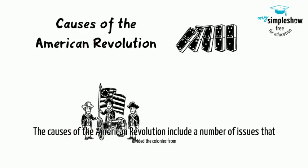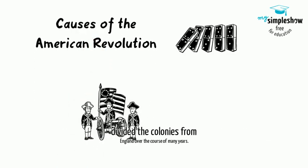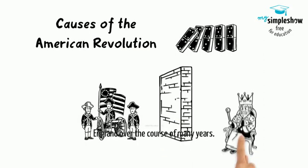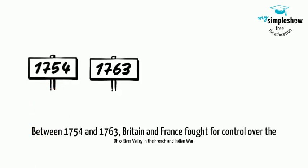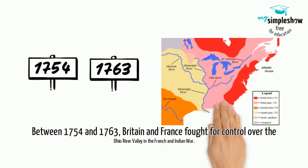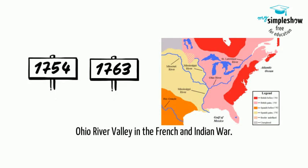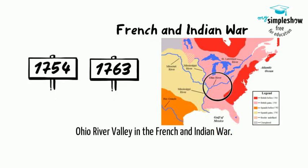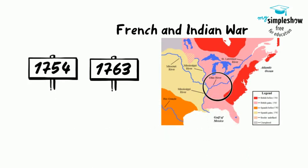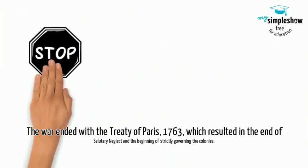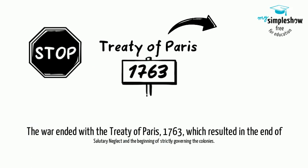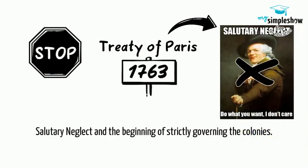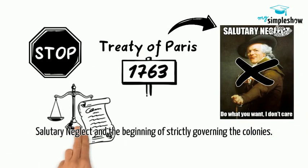The causes of the American Revolution include a number of issues that divided the colonies from England over the course of many years. Between 1754 and 1763, Britain and France fought for control over the Ohio River Valley in the French and Indian War. The war ended with the Treaty of Paris 1763, which resulted in the end of salutary neglect and the beginning of strictly governing the colonies.